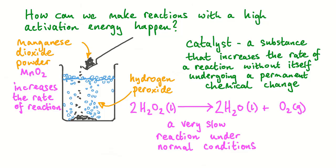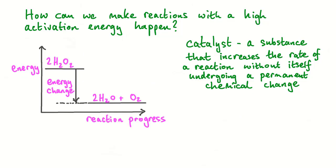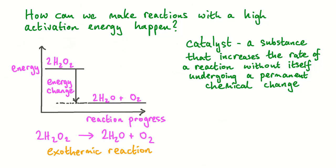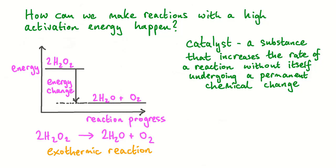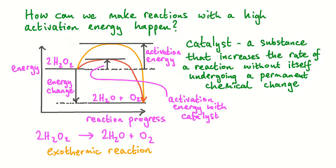A catalyst is a substance that increases the rate of a reaction without itself undergoing a permanent chemical change. The energy profile diagram for the decomposition of hydrogen peroxide shows that the overall energy change is negative — the decomposition of hydrogen peroxide is therefore an exothermic reaction, whether the reaction goes ahead with or without a catalyst. As with all chemical reactions, there is an activation energy associated with this decomposition process. If we add a catalyst to the reactant, we find that the activation energy is much smaller than it is without a catalyst.